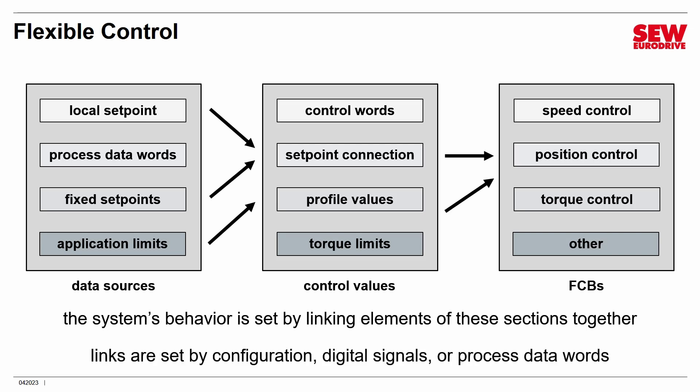You can set up links by configuration in MoviSuite by setting parameters. You can use digital signals coming in on the I/O, and you can use process data words coming over the fieldbus, or a combination of these — and that's what we'll be doing in different labs. In many cases, we're setting up data sources and hooking up virtual wires, which is why some things we do may look a little unusual at first.